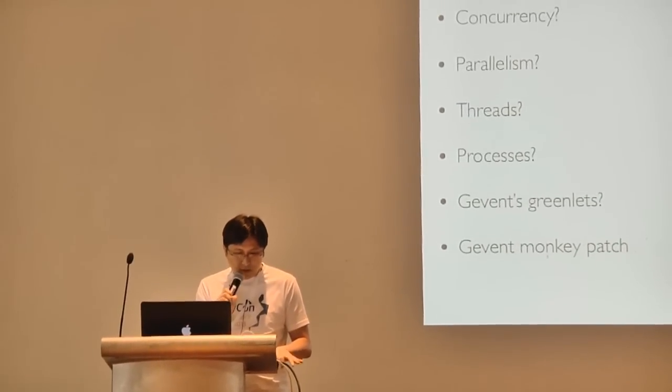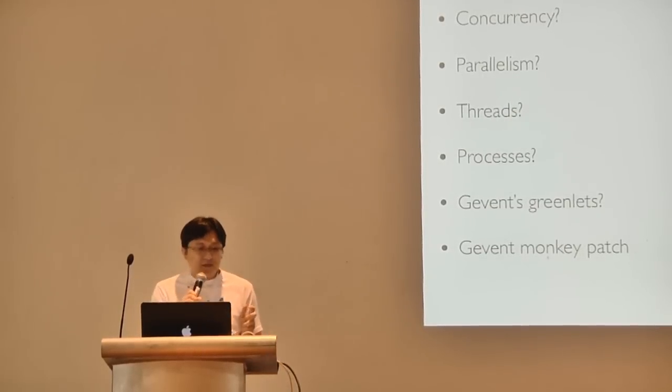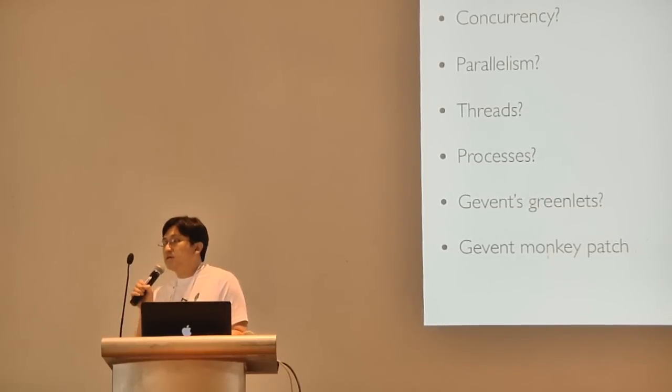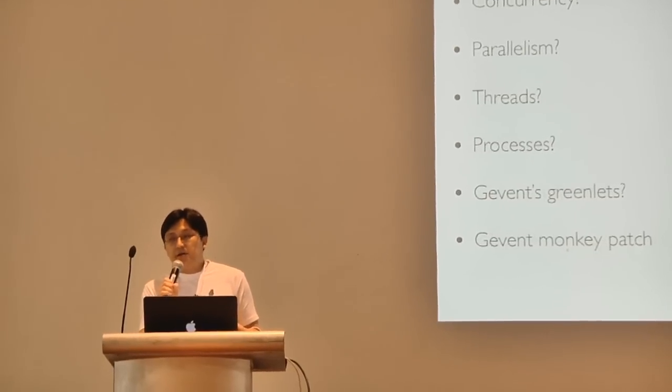GreenLets are the underlying library which gEvent depends on — essentially a lighter-weight version of a thread. A greenlet does not yield its task unless you specifically tell it to, or unless it encounters an IO operation, at which point it yields by itself. For threads, however, it yields as and when the OS schedules it. That is the key difference, and it makes a difference in how we write our code — code written as a thread versus a greenlet looks completely different.